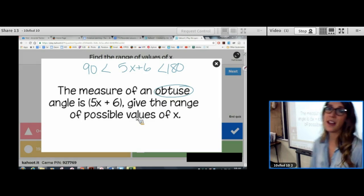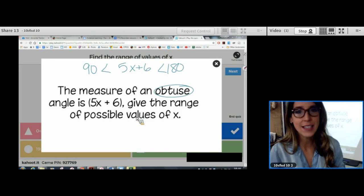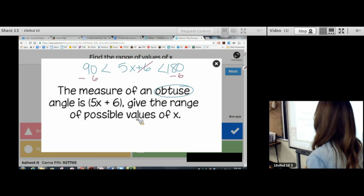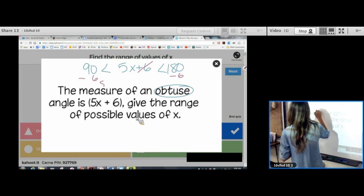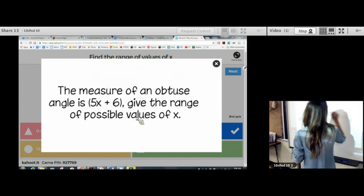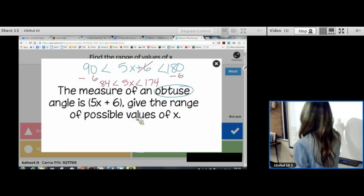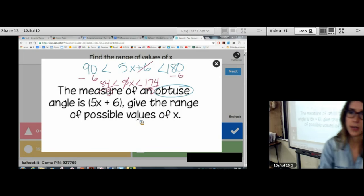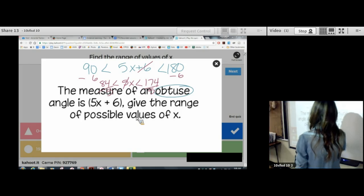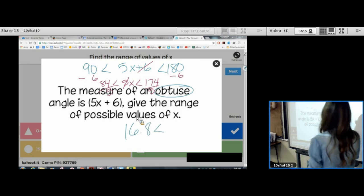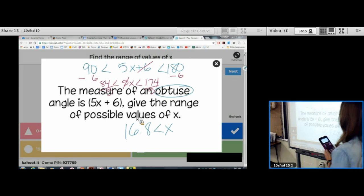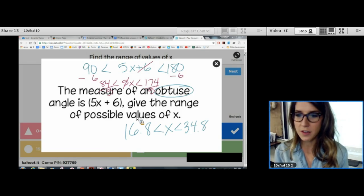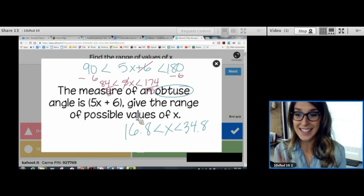Now, you solve for x just like you would any equation. If this is 5x plus 6, to get rid of the 6, you subtract it. But the cool part is, you do it to both sides. So, now we have 84 is less than 5x is less than 174. And then, now, how do you get rid of the 5? You divide by 5. And it's ugly. I didn't make the problem pretty. Sorry about that. 84 divided by 5. 16.8 is less than x is less than 34.8. Cool. Please do every single problem of your review. Check your answers online. Let me know if you see any mistakes. Good luck tomorrow.